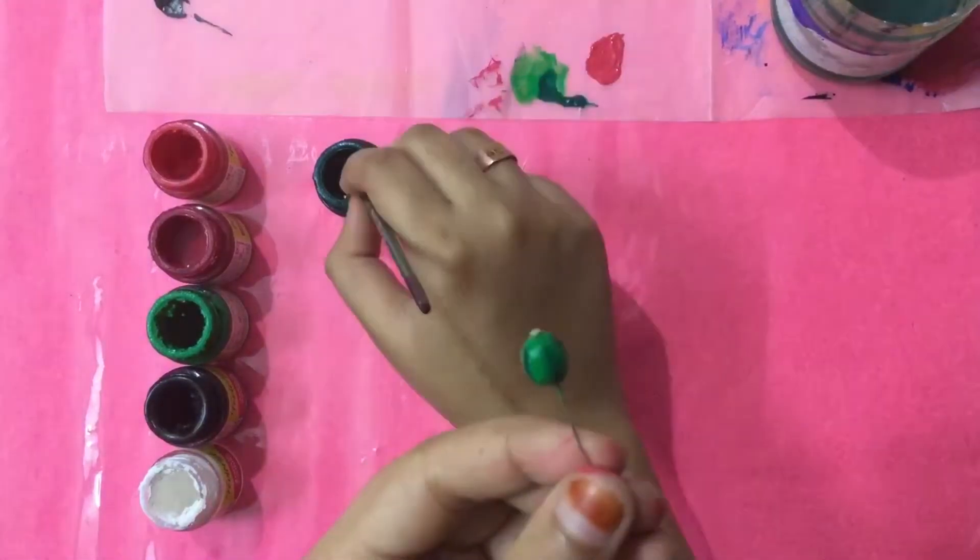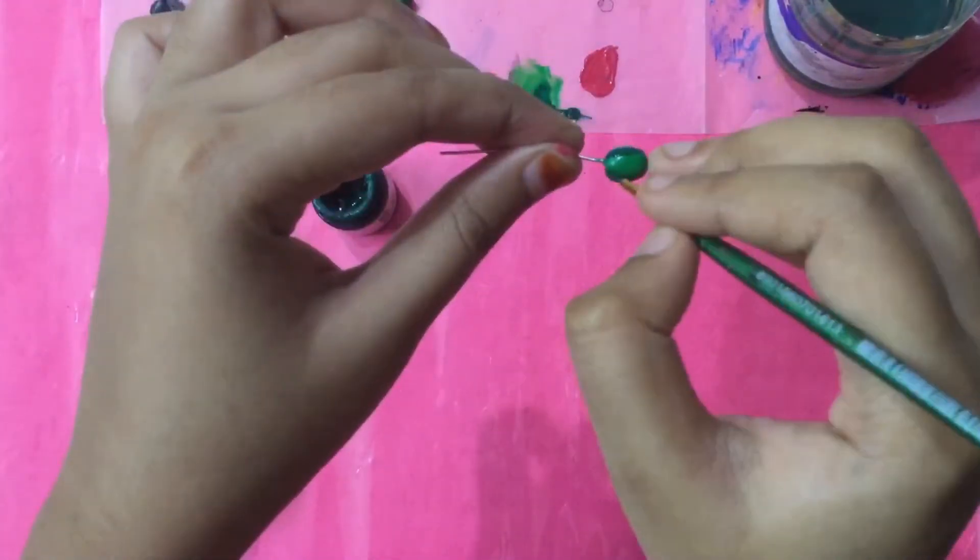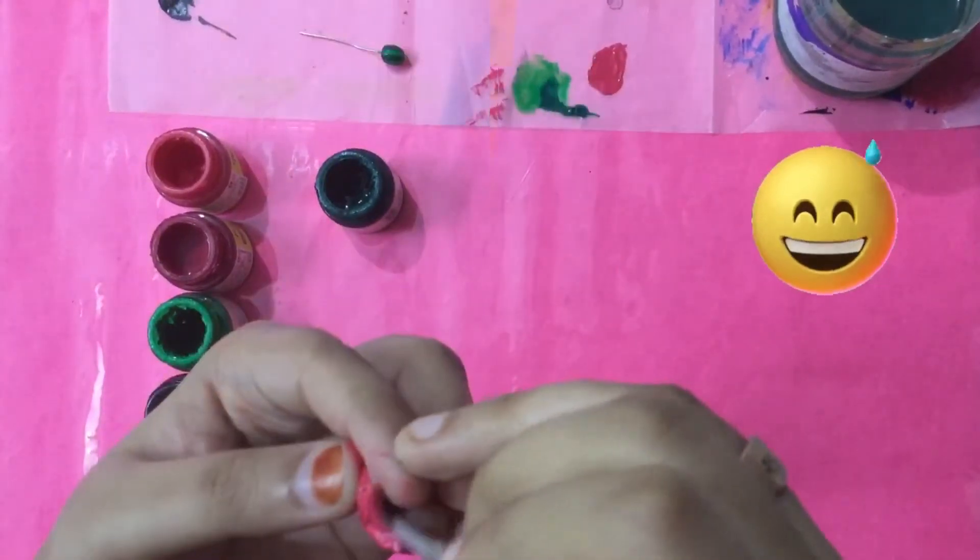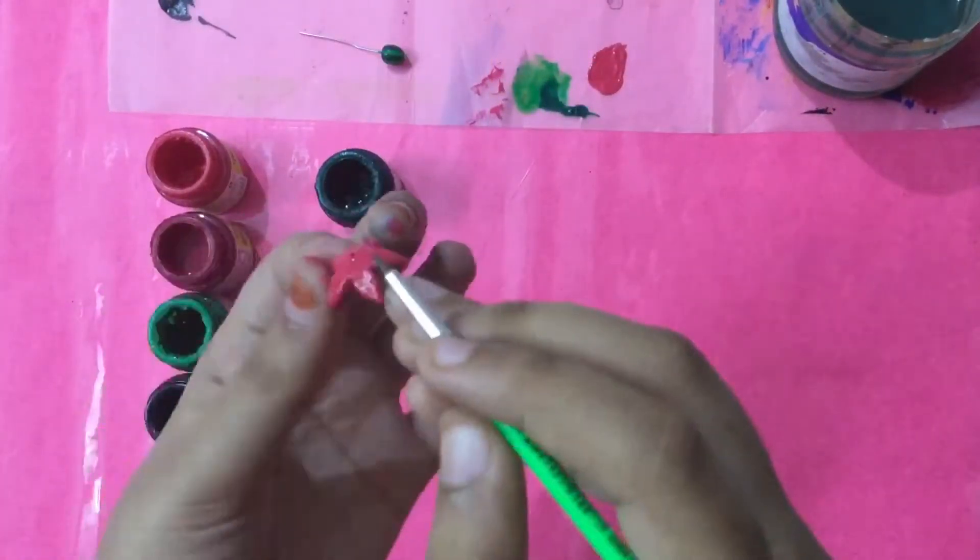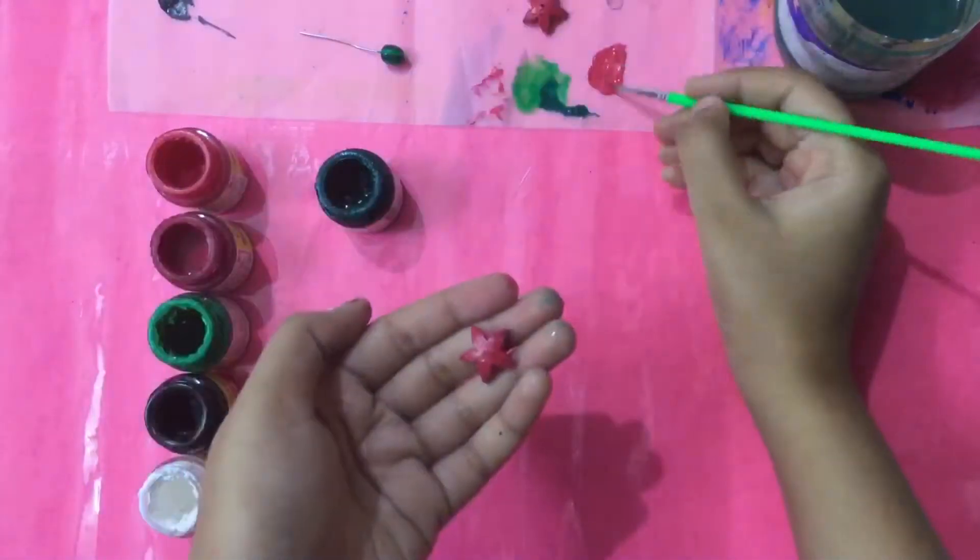We are almost done with the highlights. Now after this we are going to paint the flower, but actually I wanted to tell you guys that I forgot to film the part where I was doing the first coat of pink on this flower, so this is the second coat of the pink.